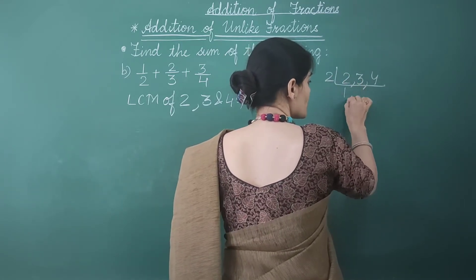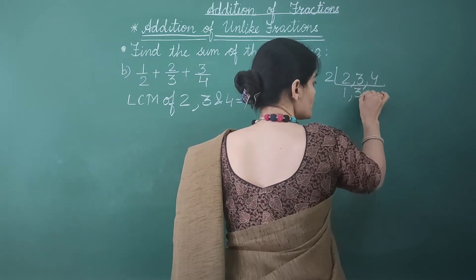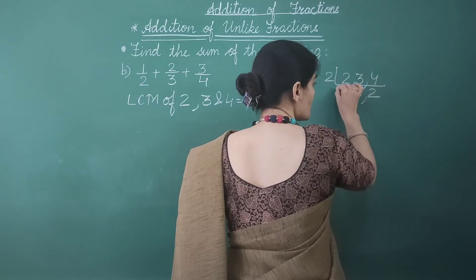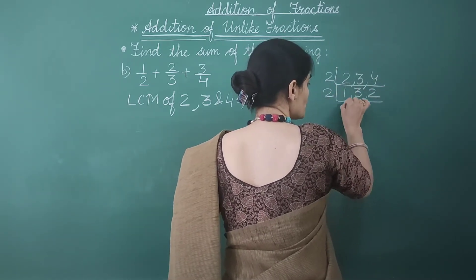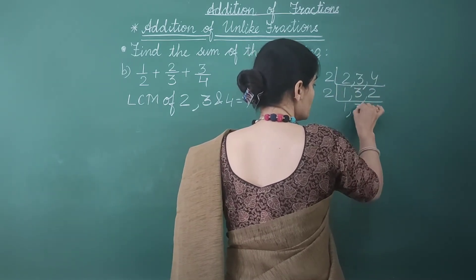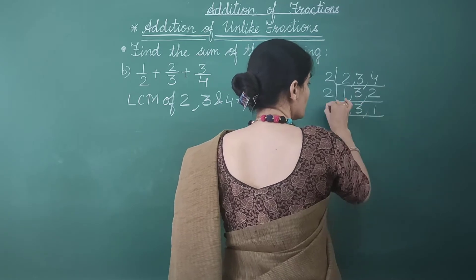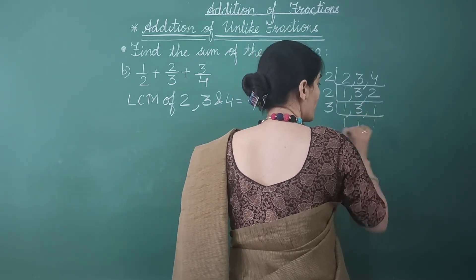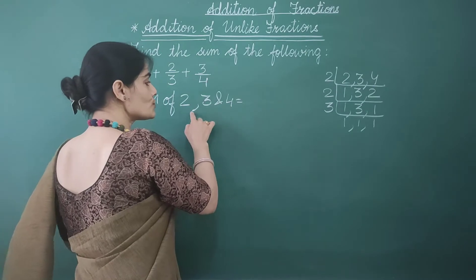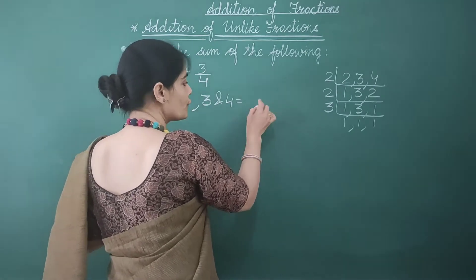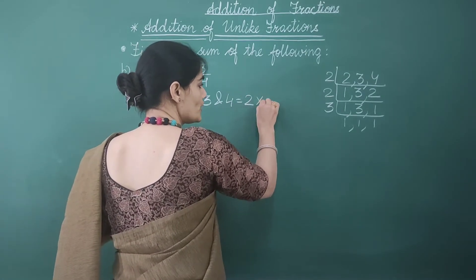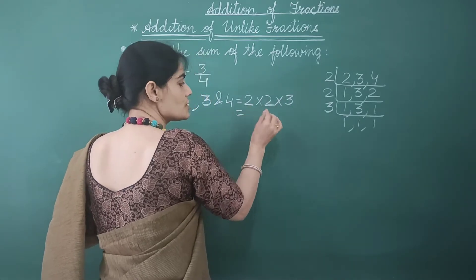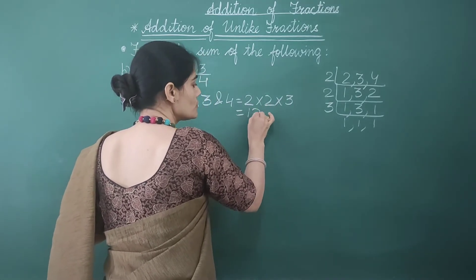2 divided by 2 gives us 1. 3 is not divisible by 2, and 4 divided by 2 gives us 2. I take 2 again: this gives 1, 3, and 1 respectively. Now I take 3: 1, 1, and 1. So the LCM of 2, 3, and 4 is equal to 2 × 2 × 3, which equals 12.